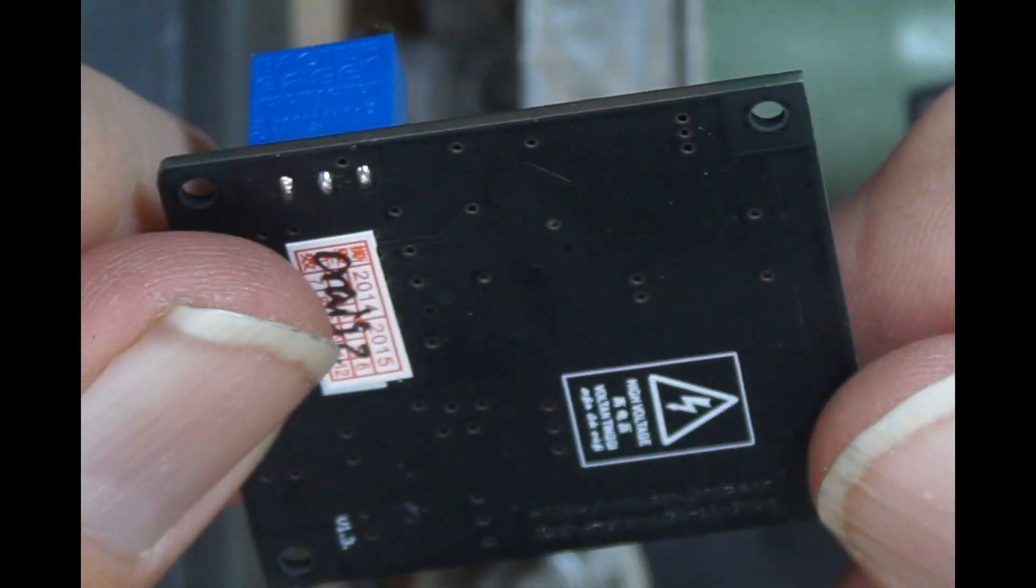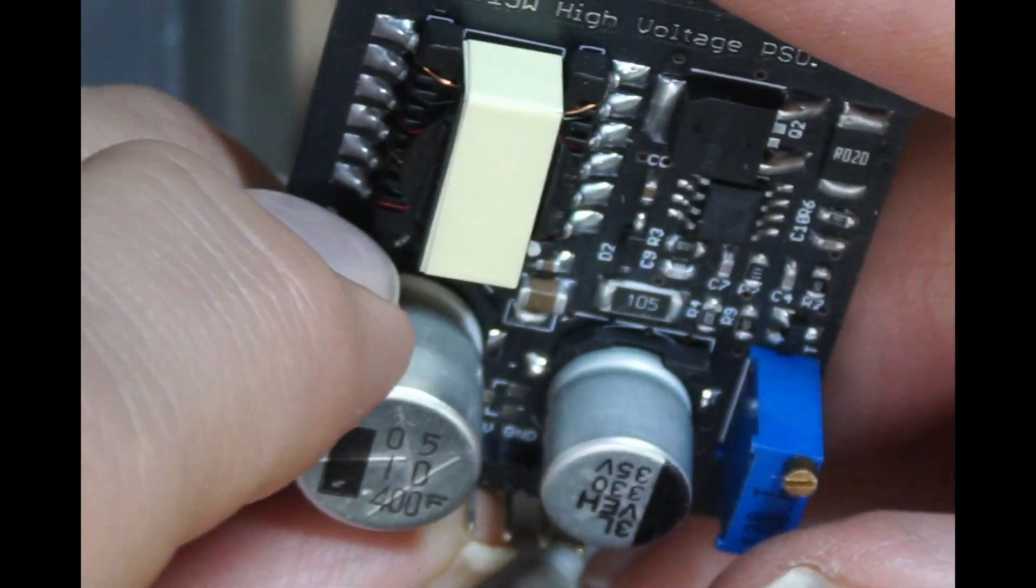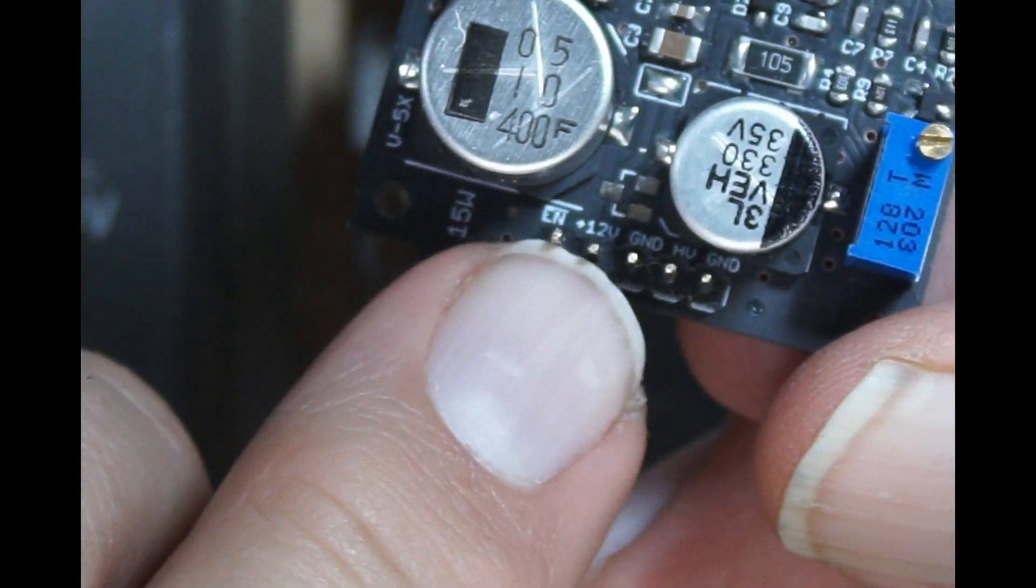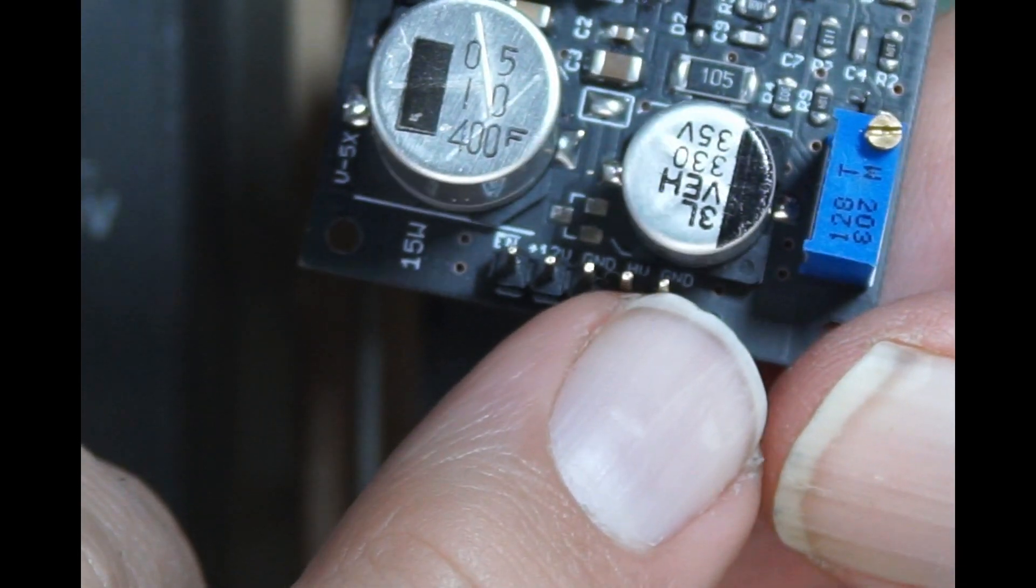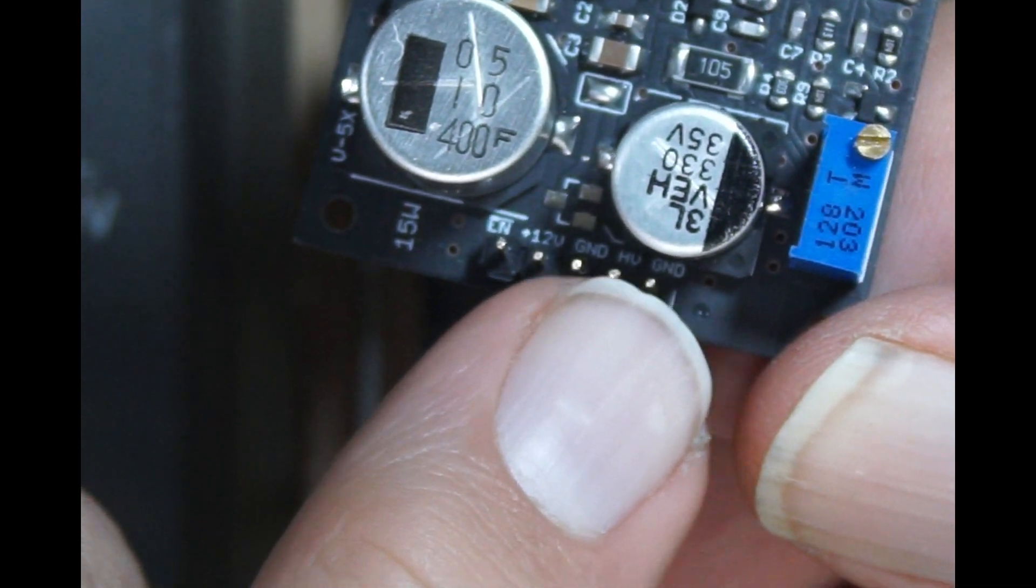Pretty simple design. These are both designed for using Nixie tubes. And all the power in and out comes out on this connector down below. So you can see that they have plus 12 ground, high voltage and ground.